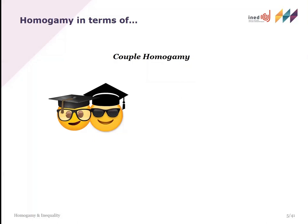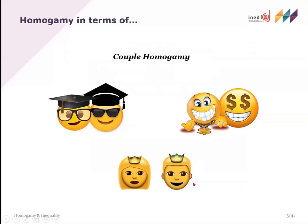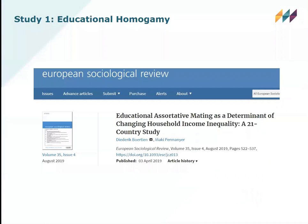We can think about homogamy in terms of various characteristics based on which people select each other or are similar to each other within relationships. The first one is education, the second is basically income or earnings, and the third — which there is much less about but is still interesting — is social background, so basically the socioeconomic position of your parents. I have worked on each of the three and hope to cover a little bit of each today.